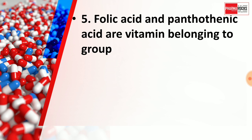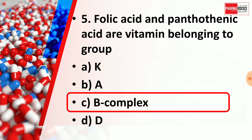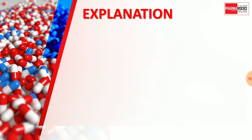Question number 5 asks about folic acid and pantothenic acid. The right answer is Option C, Vitamin B complex. Folic acid and pantothenic acid are vitamins belonging to the Vitamin B complex group. The explanation: 9 water-soluble vitamins are found in the human diet.